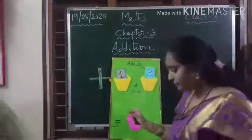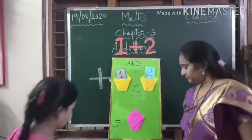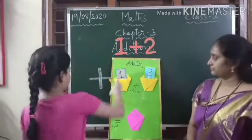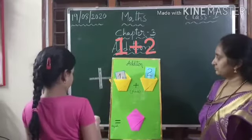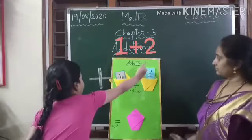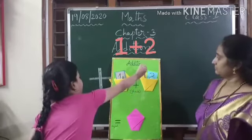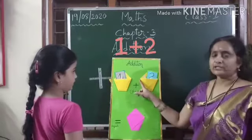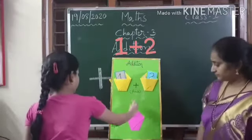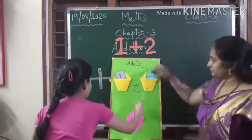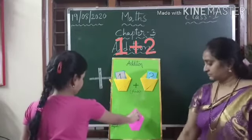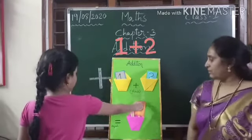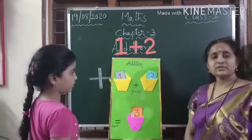Gathri, come and do the next problem: one plus two. One — and two, three. One plus two — plus means addition, we need to put the things together. One, two, three. So one plus two equals three. Tell me once again — one plus two equals three.